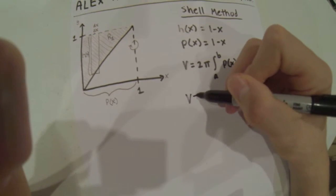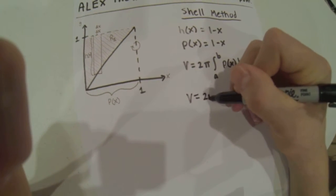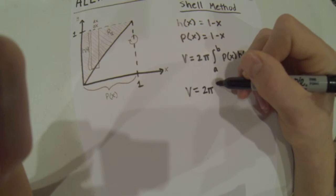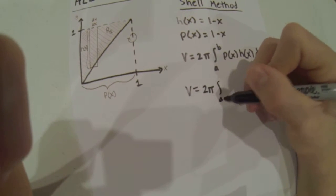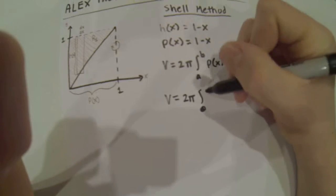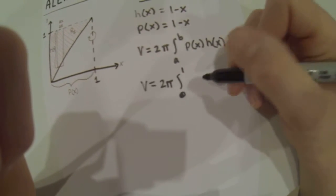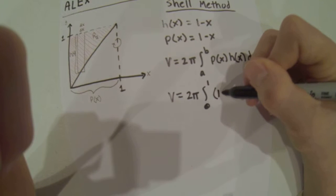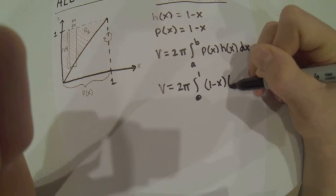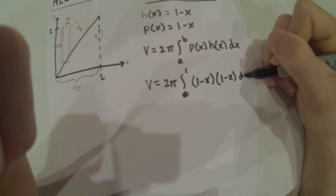So our volume equals 2π integral from 0 to 1 of p(x), which is 1 minus x, times h(x), which is 1 minus x, dx.